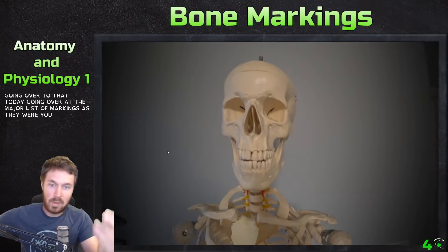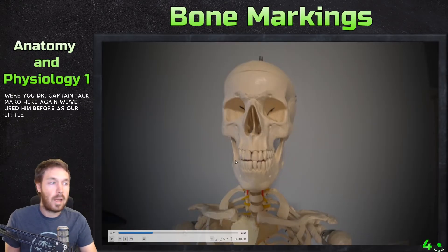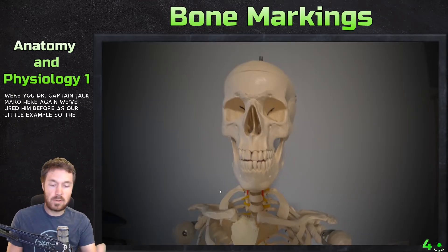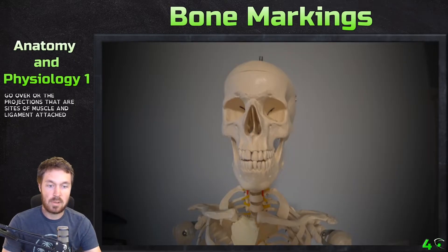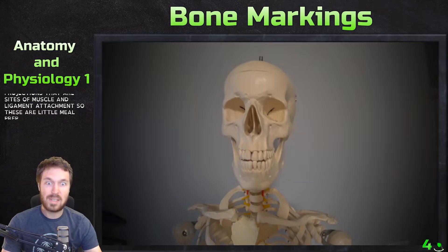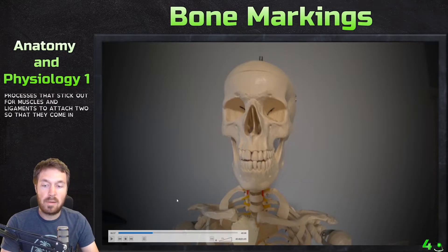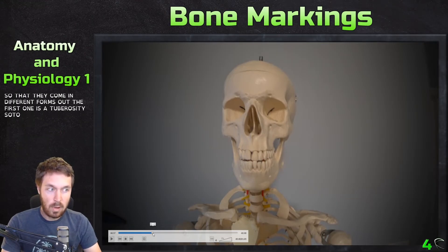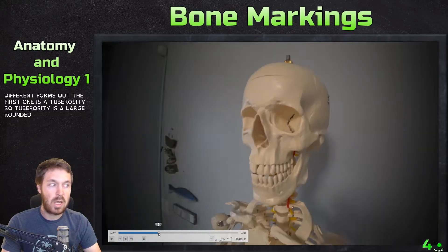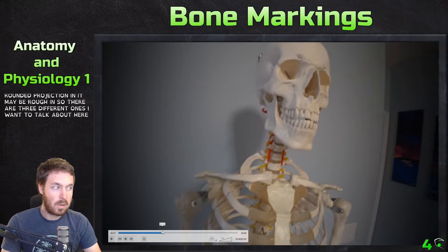So we're using Dr. Captain Jack Merrow here again — we've used him before as our little example. The first group I want to go over are the projections that are sites of muscle and ligament attachments. These are processes that stick out for muscles and ligaments to attach to. They come in different forms. The first one is a tuberosity — a large, rounded projection that may be roughened. There are three different ones to talk about: tuberosity, tubercle, and trochanter.